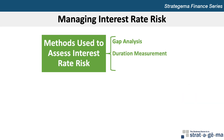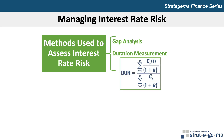An alternative approach to assessing the interest rate risk is to measure duration. Some assets or liabilities are more rate sensitive than others, even if the frequency of adjustment and the maturity are the same. The duration measurement can capture these different degrees of sensitivity. The duration of each type of bank liability can also be estimated, and the duration of the liability portfolio is likewise estimated as the weighted average of the durations of the liabilities.